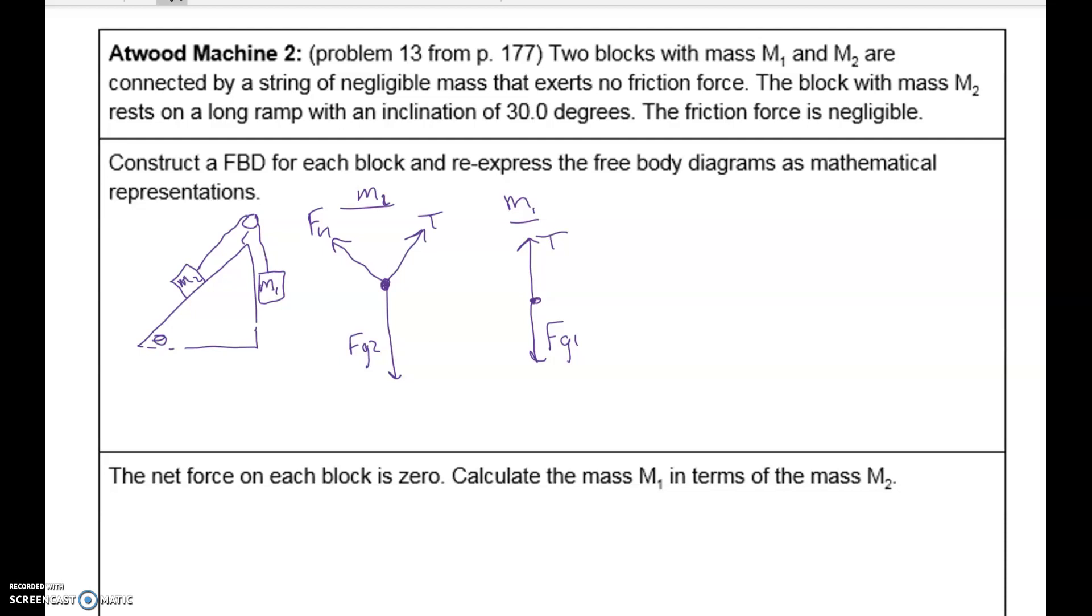So since we don't know the direction of acceleration, we want to pick a direction to call positive and kind of go with it. What we'll find is that either our acceleration will work out and our acceleration value will be positive, meaning the direction we picked was correct. If we end up with acceleration being negative, it just meant the acceleration was actually the opposite way. I'm making it sound a lot more complicated than it is. But basically, let's assume that m2 is sliding down the ramp. So we'll call down the ramp positive. That'll be my positive x direction. m1, we want to be consistent, so we want to call upward positive for that. So that way, our acceleration is positive and in the same way.